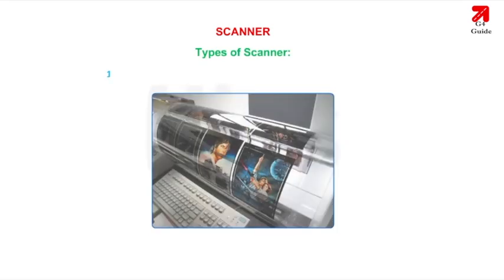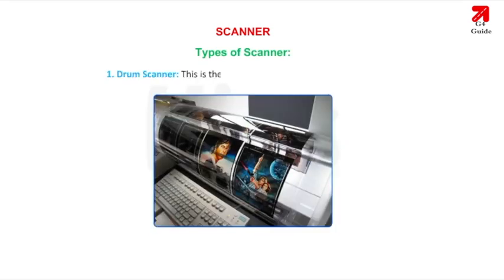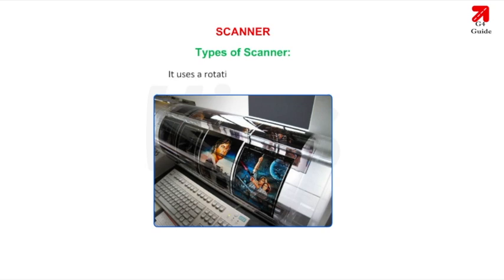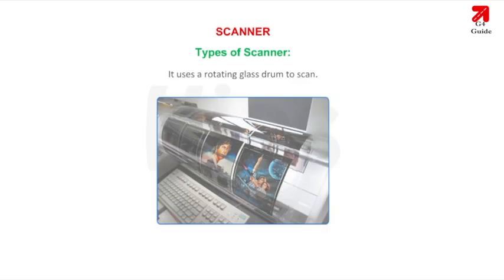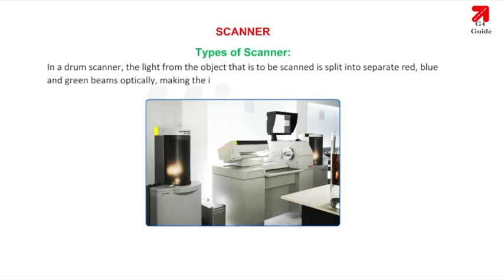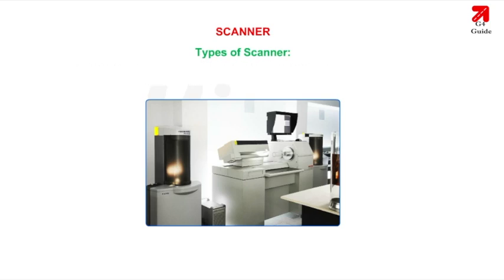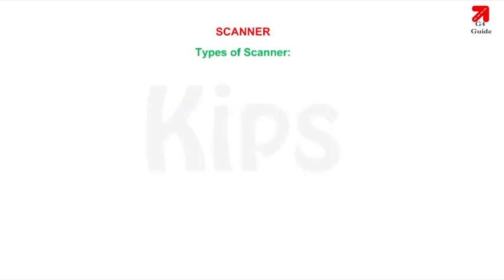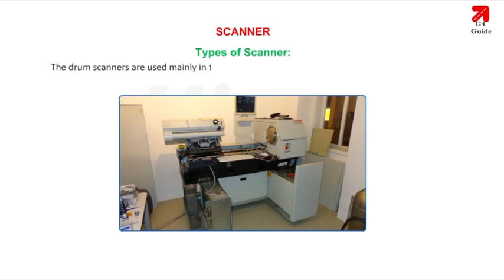Types of Scanner — 1. Drum Scanner: This is the most efficient and expensive scanner. It uses a rotating glass drum to scan. The light from the object to be scanned is split into separate red, blue and green beams, making the image precise. This mechanism is called the Photo Multiplier Tube (PMT) technology. Drum scanners are used mainly in the publishing industry to print high quality images in books and magazines.